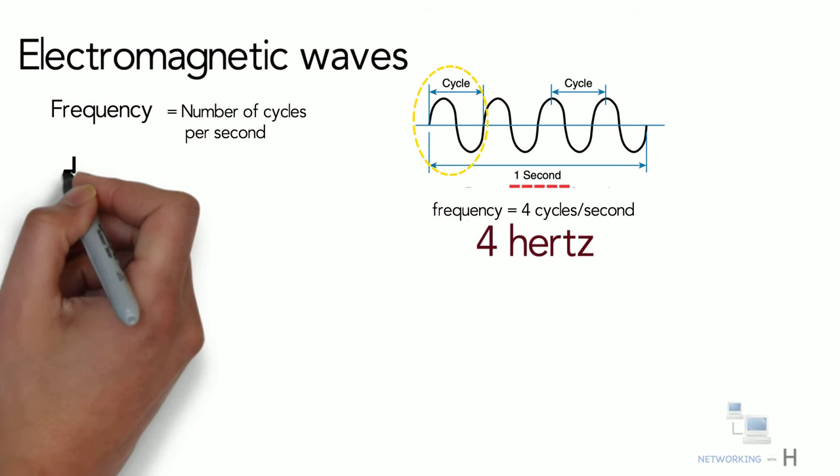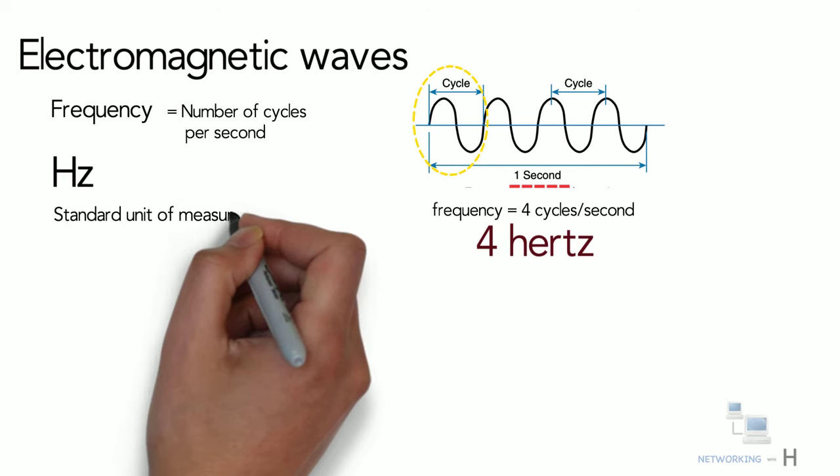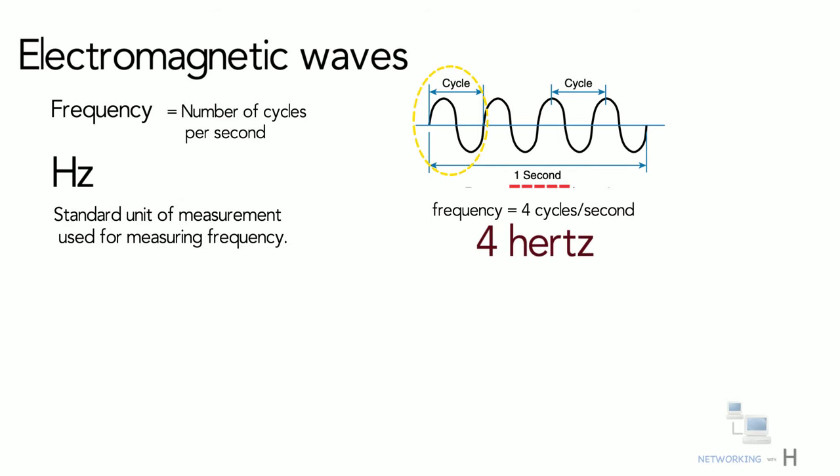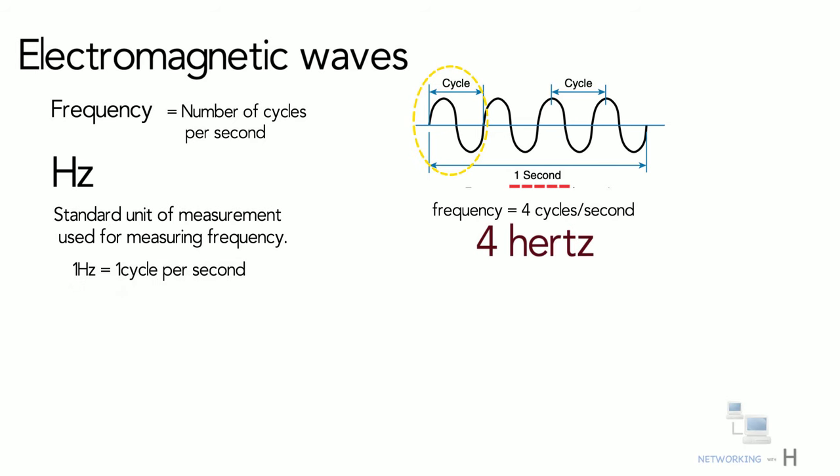Hertz, also known as Hz, is the standard unit of measurement used for measuring frequency. Since frequency is measured in cycles per second, one hertz equals one cycle per second.